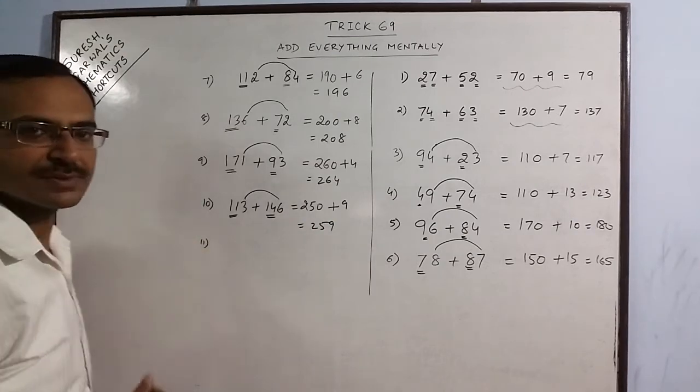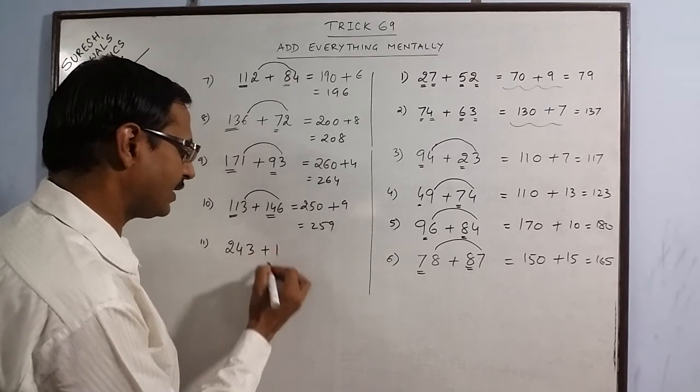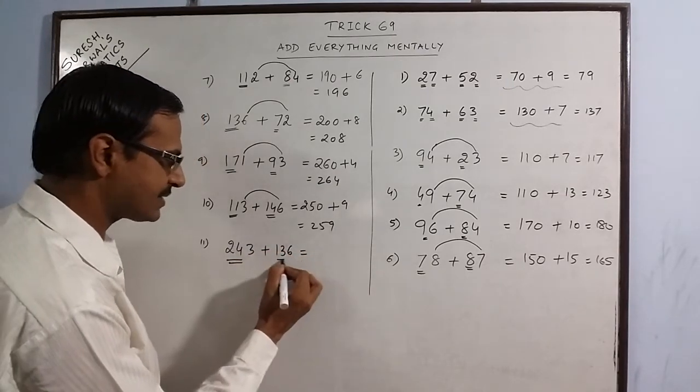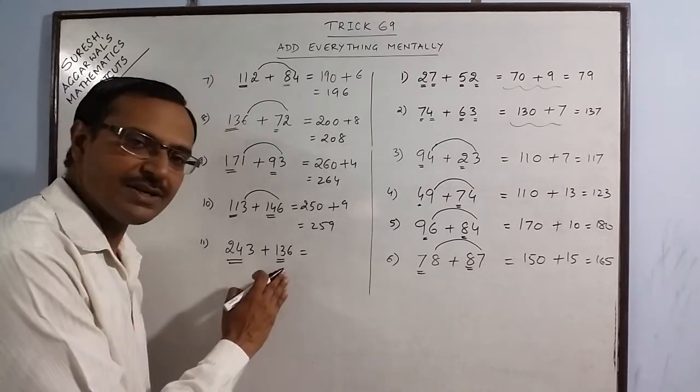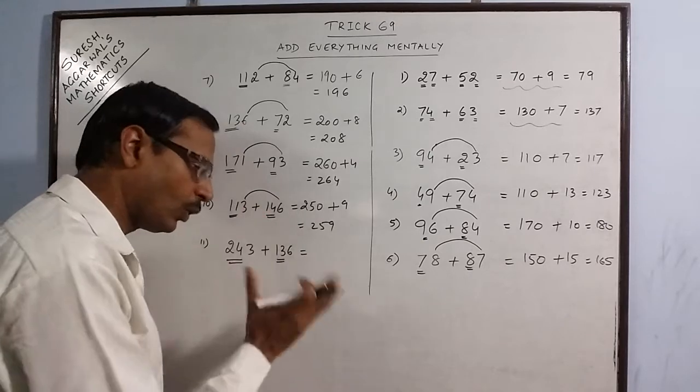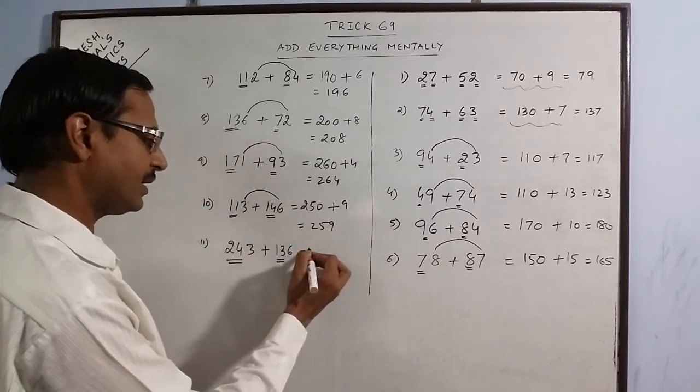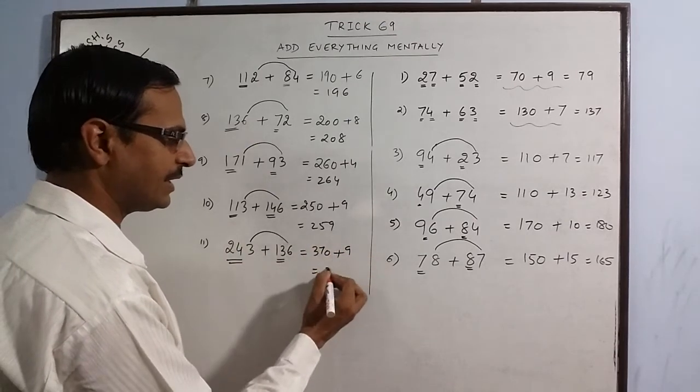More examples. 243 plus 136. 24 plus 13. The more effective you become in mental addition, the more larger questions you can attempt mentally. 24 plus 13 is 37. Put 1 0. 3 plus 6 is 9. 379.